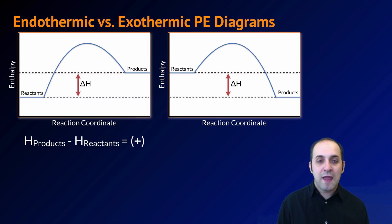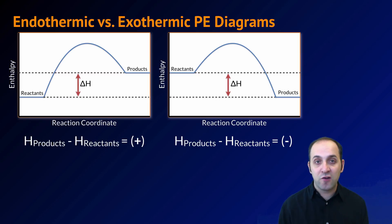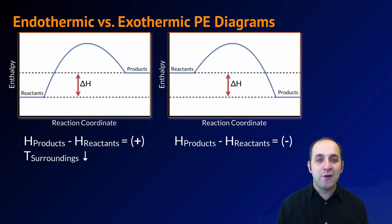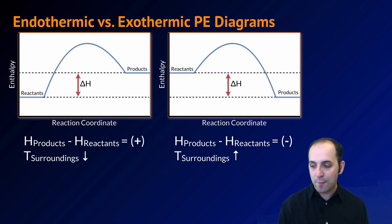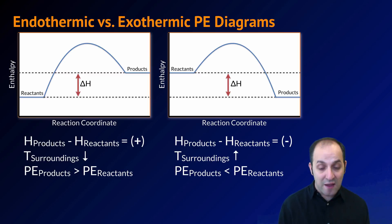In the example on the left, the energy of the products minus the energy of the reactants would be a positive value — a larger number minus a smaller number — which means it's an endothermic reaction. The one on the right is an exothermic reaction because the energy of the products minus the energy of the reactants is a negative value. In the endothermic reaction we had to put energy in, so we'd expect the temperature of our surroundings to go down. In the exothermic reaction we're releasing energy, so we'd expect the temperature of our surroundings to go up. The potential energy of products is greater than reactants on the left, and less than reactants on the right.